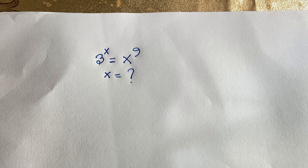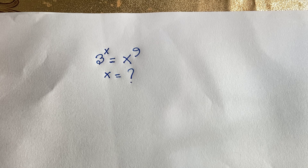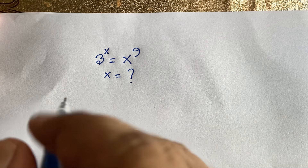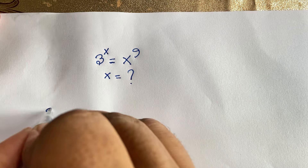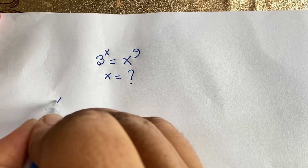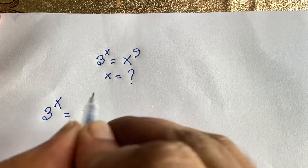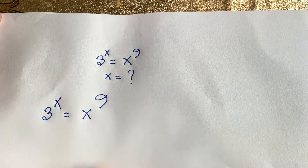Hello everyone. In this video we have solved this interesting exponential equation — it is a German Math Olympiad question. 3 to the power x is equal to x to the power 9. What is x? Our question is: 3 to the power x is equal to x to the power 9.